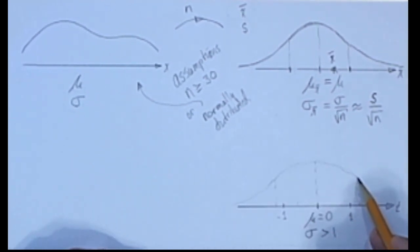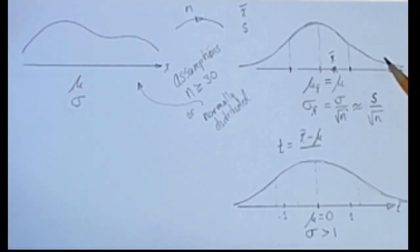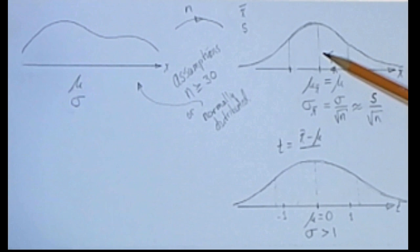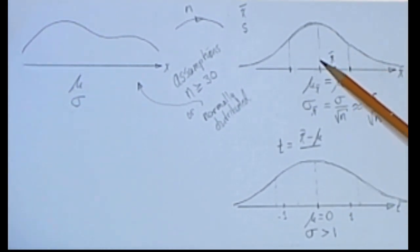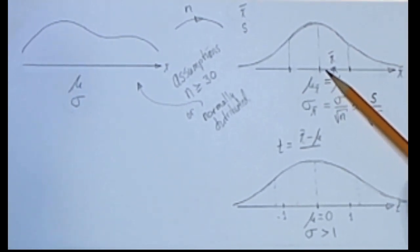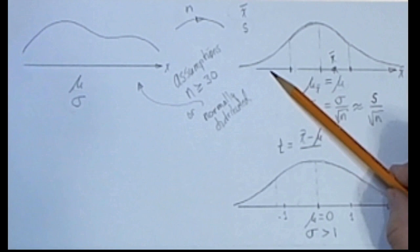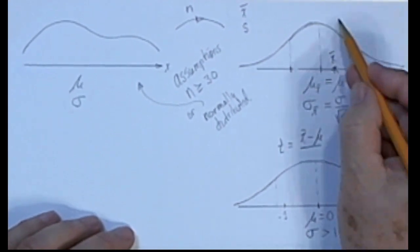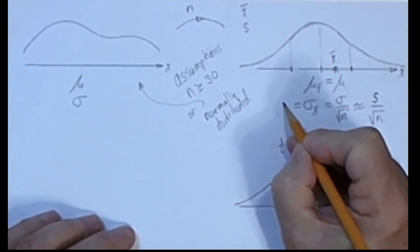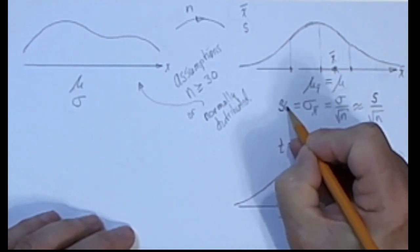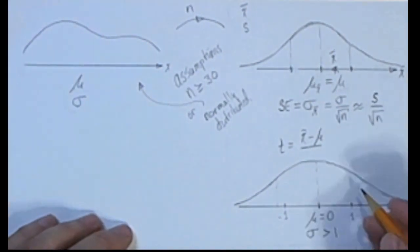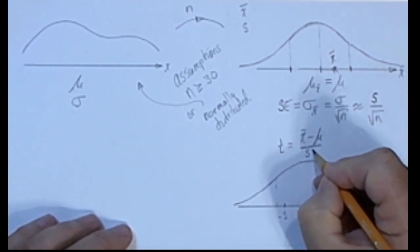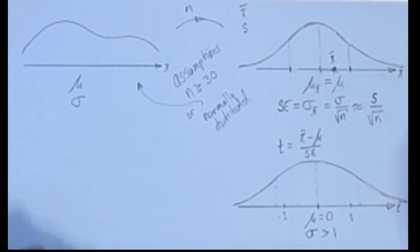Any value in this distribution of sample statistics can be converted to a T value by taking that value. Say we want to convert this X bar to a T value. We take that X bar minus mu. That will tell us how far X bar is away from the mean of this distribution, and then divide by the standard deviation of this distribution. We agreed that we would always call this standard deviation, the distribution of sample statistics, SE. We'll just need to divide by that SE, which we'll have to approximate with this amount.